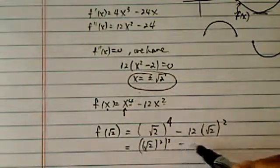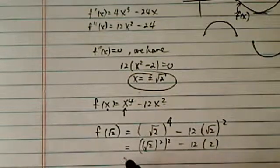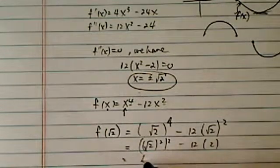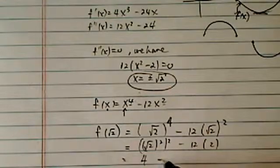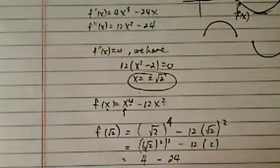You can do this: radical two to the 4th is radical two squared, squared. Two times two, which is four, minus 24, so we have minus 20.